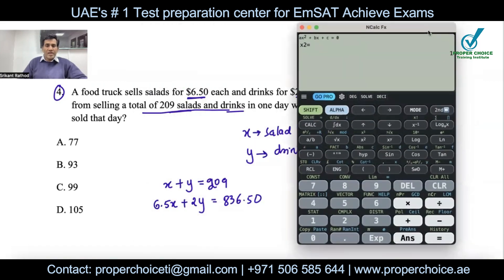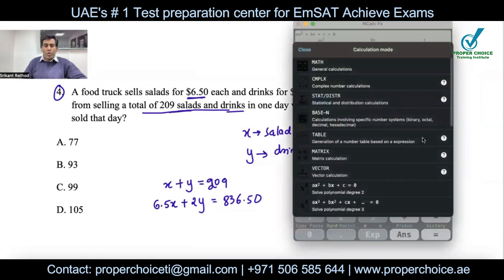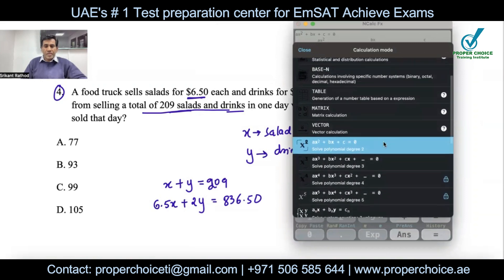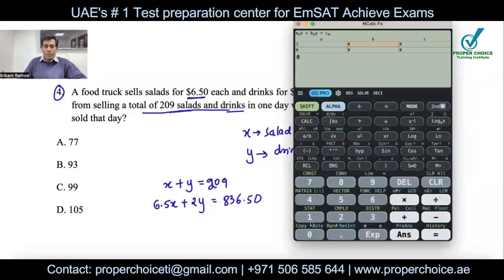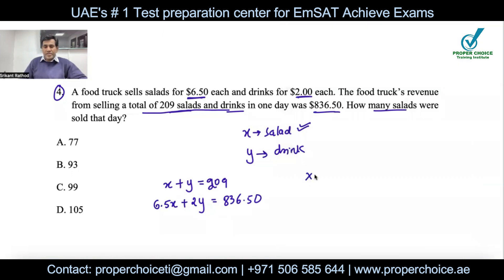Using the calculator in system-of-equations mode with two unknowns: enter coefficients 1, 1, 209 for the first equation and 6.5, 2, 836.50 for the second. The calculator gives x = 99 and y = 110. So the food company sold 99 salads that day, which is option C.